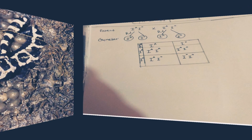Later on, when a cross between Hybrid A and Hybrid A would have taken place, it would have given rise to pure blood group A. And similarly, in a cross between Hybrid B and Hybrid B, pure B group would have formed.